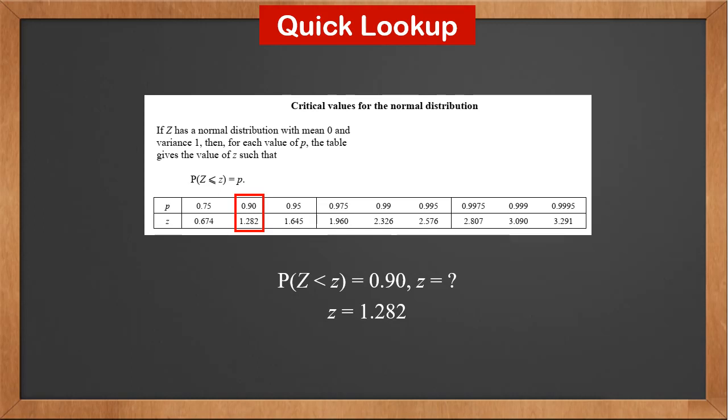You can also do a quick direct lookup. For example, if you want to find P(Z < 2.326), you can find the z value and its corresponding p-value. Therefore, the answer is 0.99.